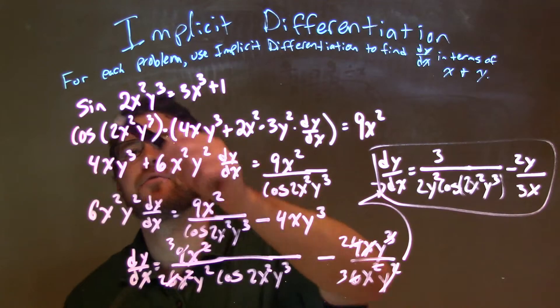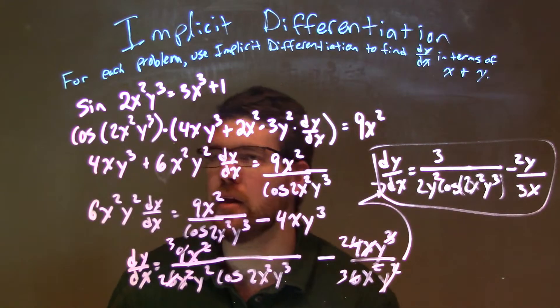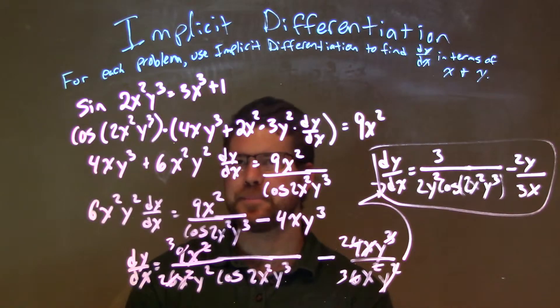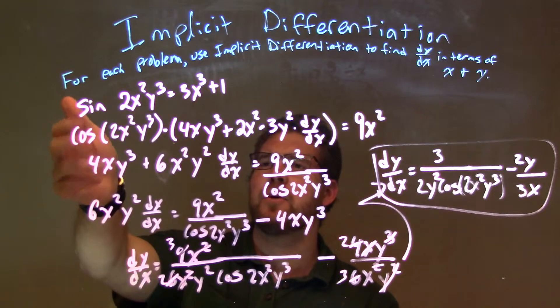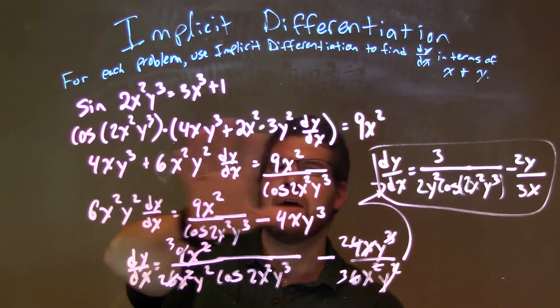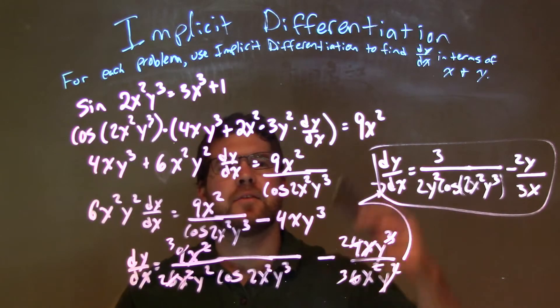So as a recap, we're given sine of 2x squared y cubed equals 3x cubed plus 1. Left-hand side, derivative of sine is cosine, derivative of the inside using that chain rule, and the right-hand side became 9x squared.